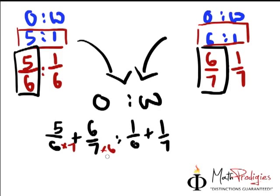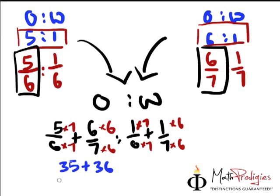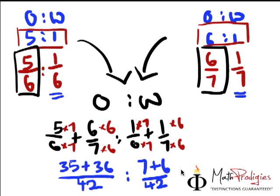Times 7 here, times 6 here. Then you must be fair to the numerator, you must also times a similar number. Same thing goes for this side. Times 7 times 6, be fair to the tops. So what you are left with is you will get 5 times 7, which gives you 35, plus 6 times 6, which is 36, over 42 is to... Of course we take the second one, 1 over 6 and 1 over 7. So we get 1 times 7 gives me 7, 1 times 6 gives me 6, 7 plus 6 over 42.